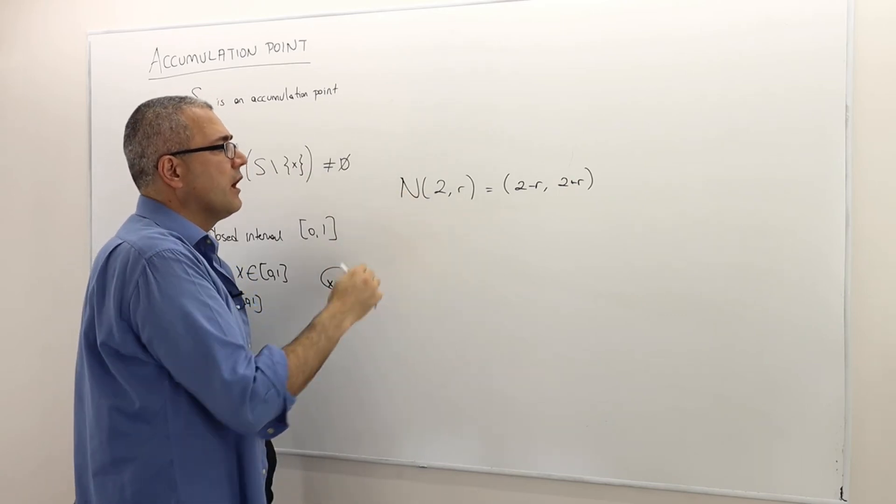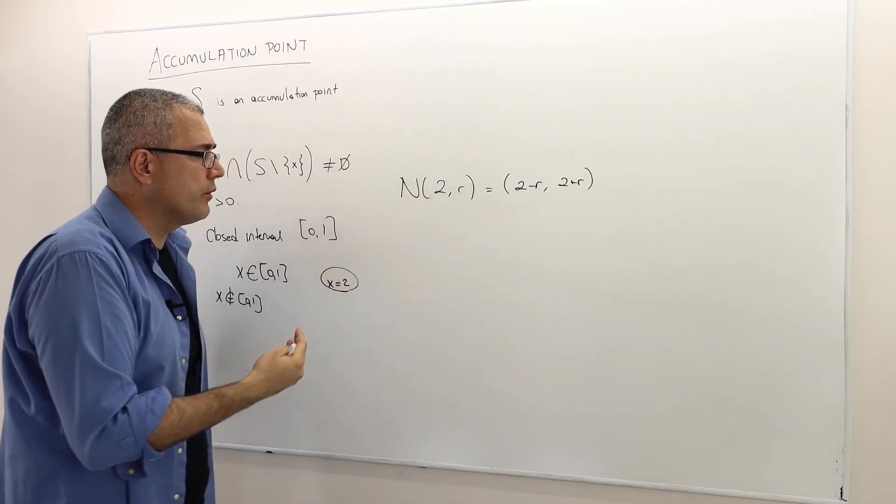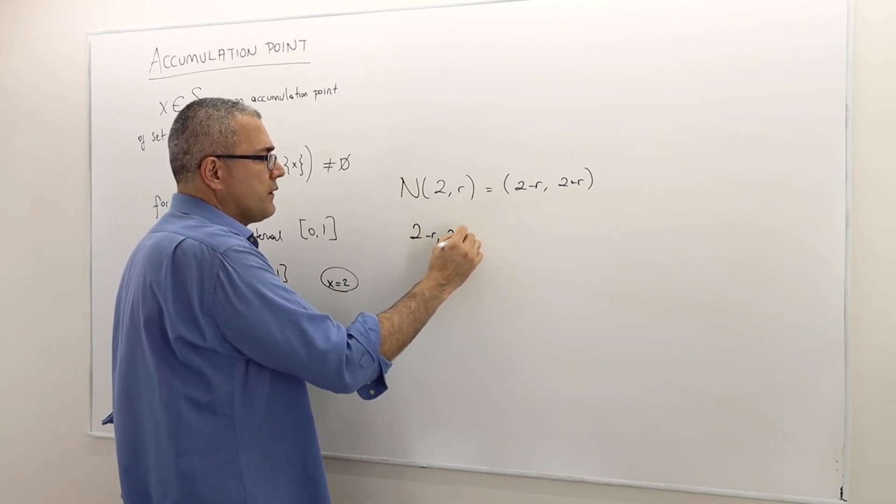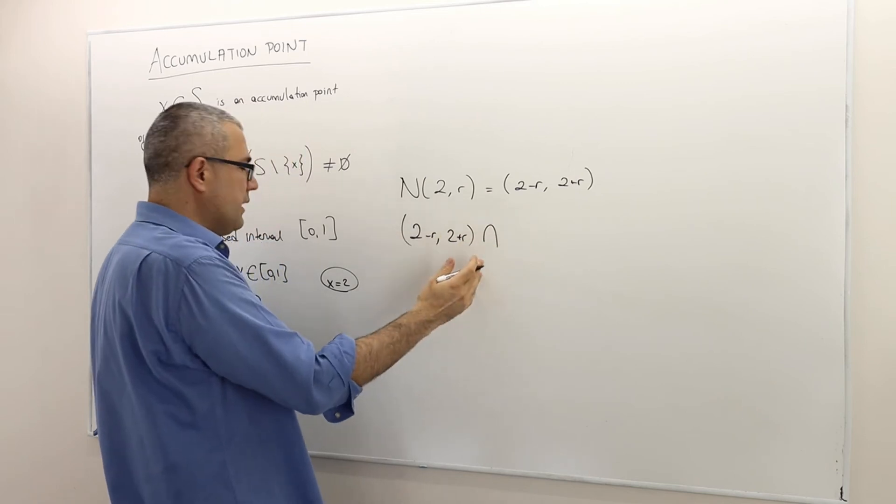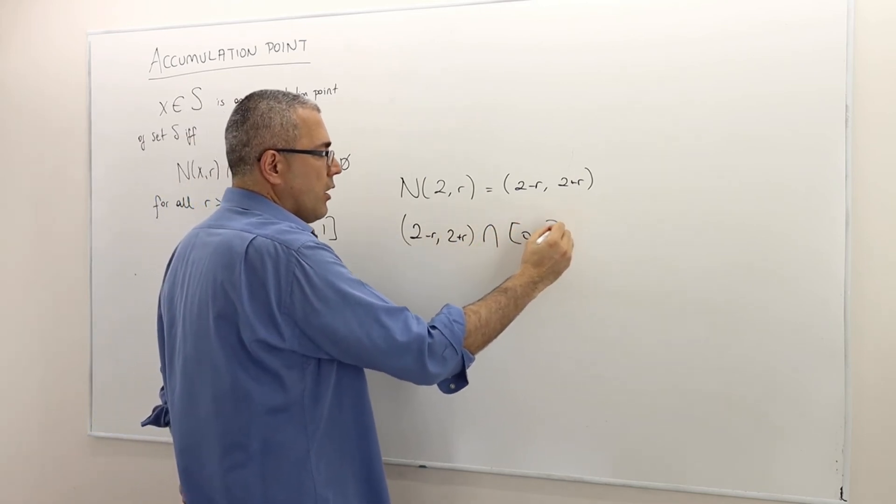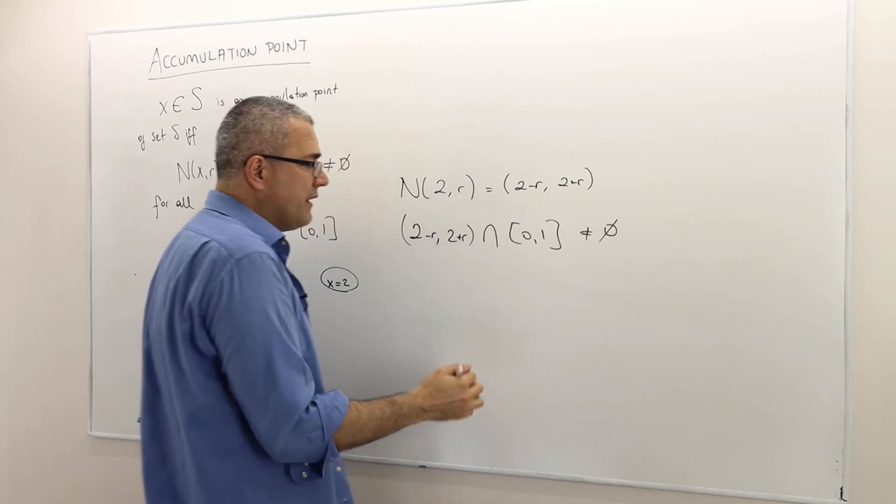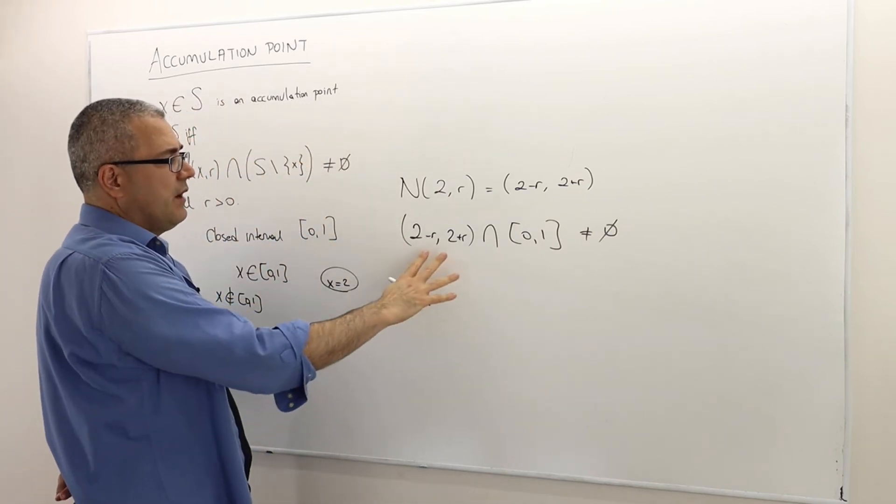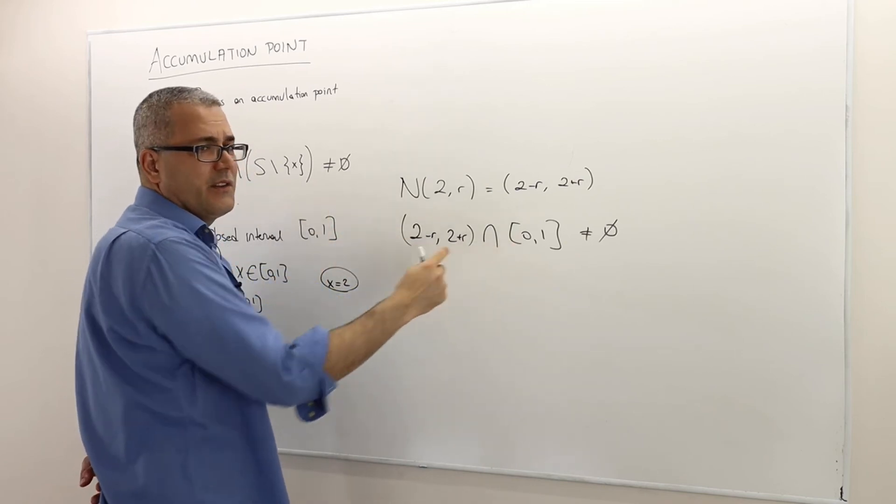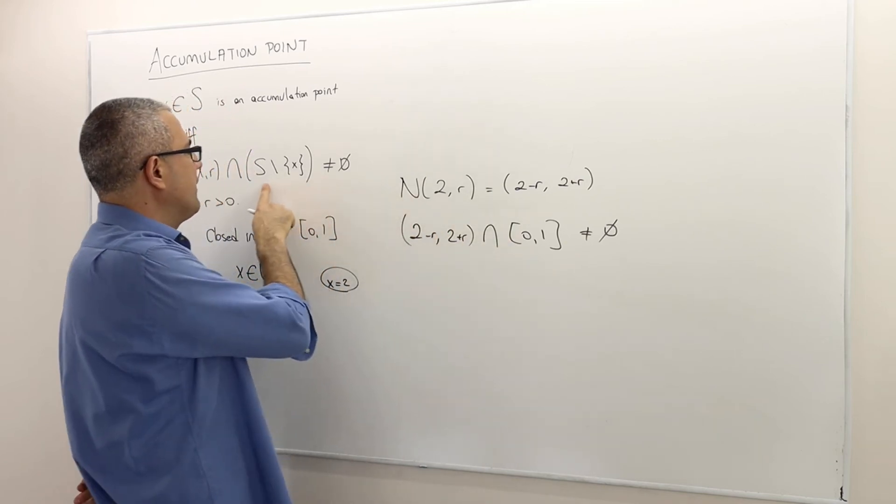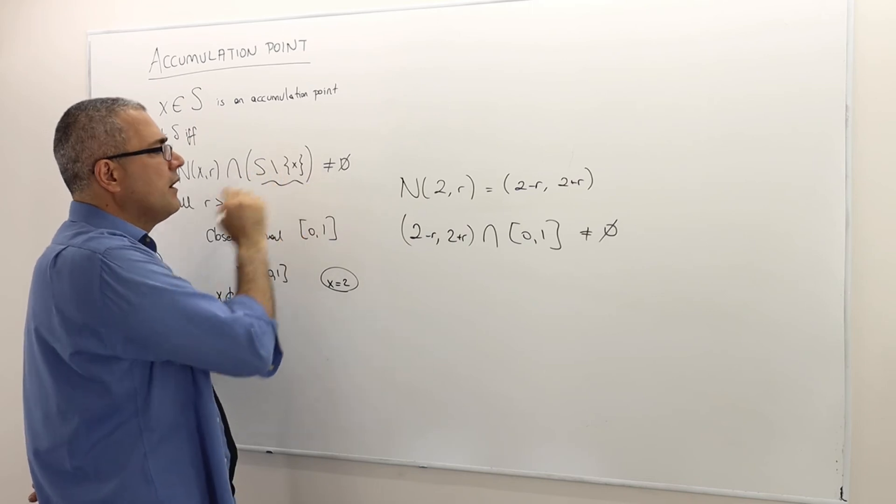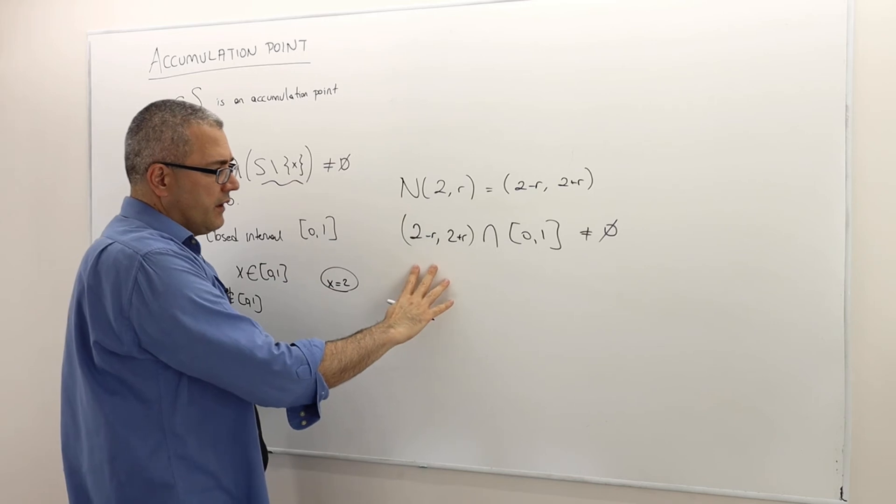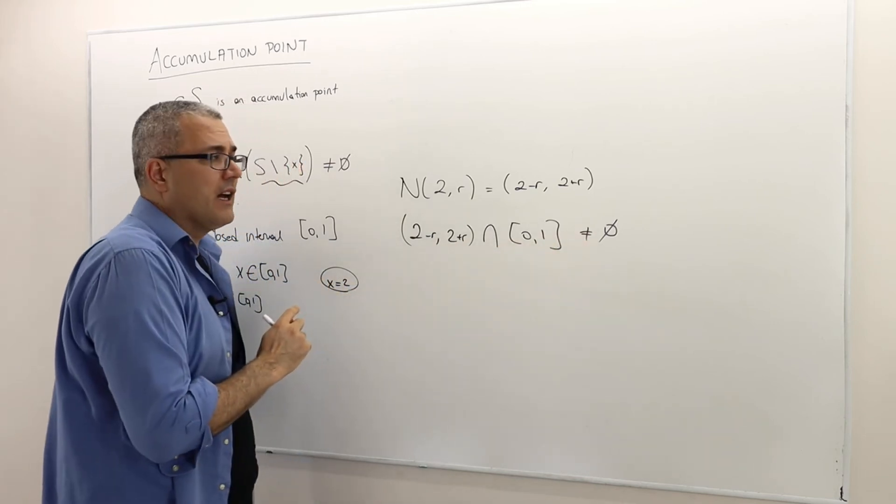So this is in real lines how we define a neighborhood. So the thing is, do I have this (2 minus R, 2 plus R) open interval, intersection [0, 1], non-empty, other than 2, obviously. Well, but in this example, 2 is not in the set. So I shouldn't really worry about this part because it's going to give me [0, 1] closed interval anyway. But the question is, is this intersection empty or not?